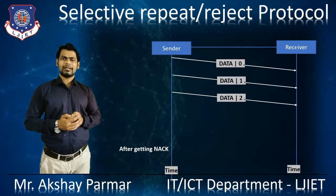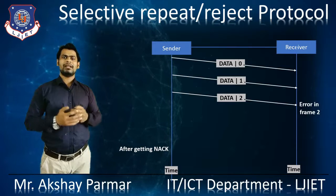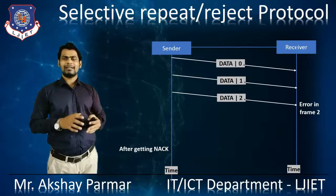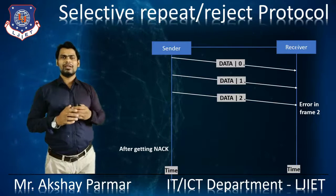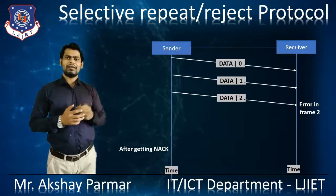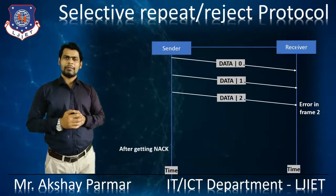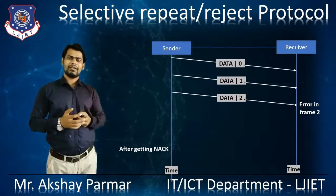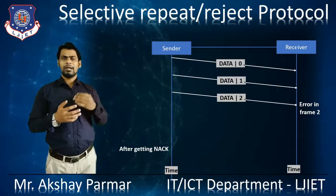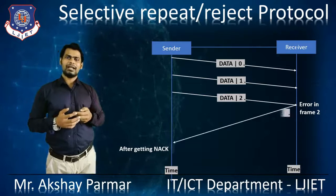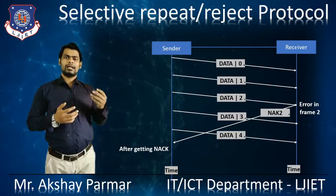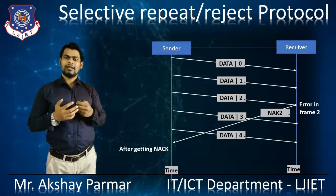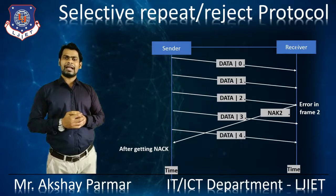After that, the receiver observes that data frame 2 has an error. The receiver finds some error in data frame 2, so the receiver sends a negative acknowledgement to the sender side to confirm that data frame 0 and data frame 1 are received successfully with no errors, but data frame 2 has an error. So the receiver sends negative acknowledgement 2 to the sender side. Meanwhile, the sender is sending data frame 3 and data frame 4 and so on, while waiting for the acknowledgement — either a positive acknowledgement or a negative acknowledgement.